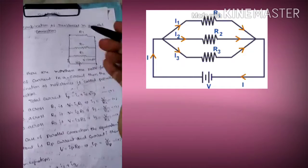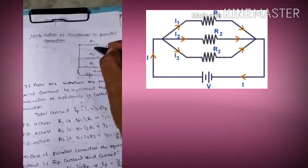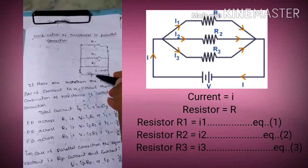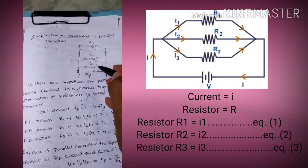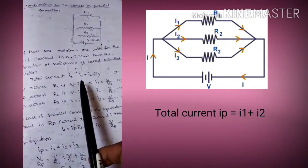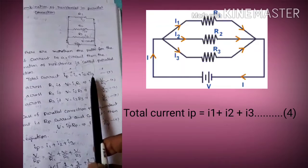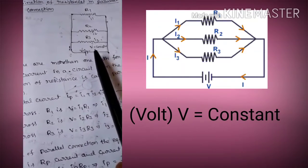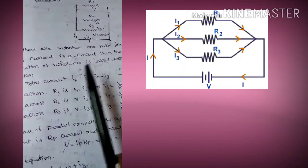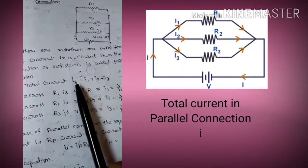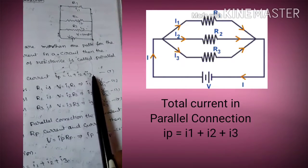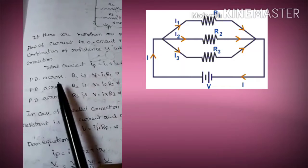The current flowing through R1 is i1, through R2 is i2, and through R3 is i3. The total current ip is equal to i1 plus i2 plus i3. Here the voltage V is constant, but the current divides across the multiple paths. So the total current in parallel is ip = i1 + i2 + i3.